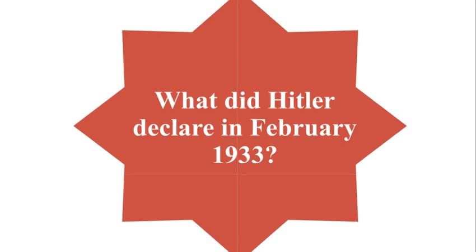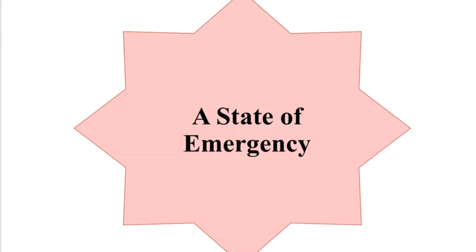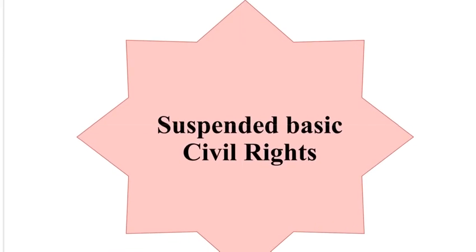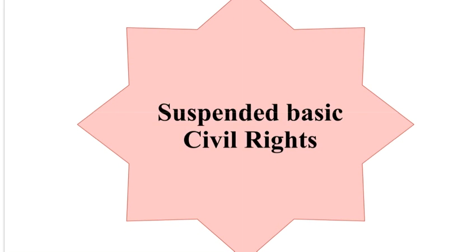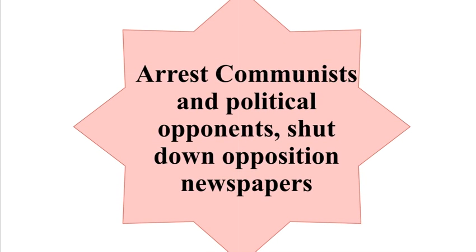What did Hitler declare in February 1933? A State of Emergency. What did the Decree for the Protection of People and State do? It suspended basic civil rights. What did the Nazis do immediately after the fire? They arrested Communists and political opponents, and shut down opposition newspapers.